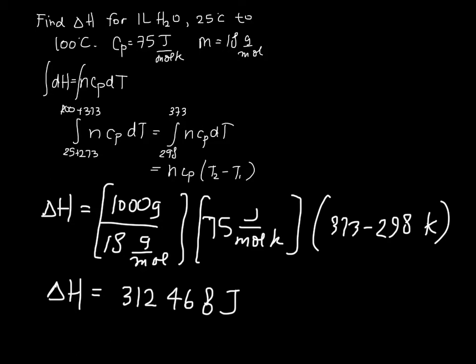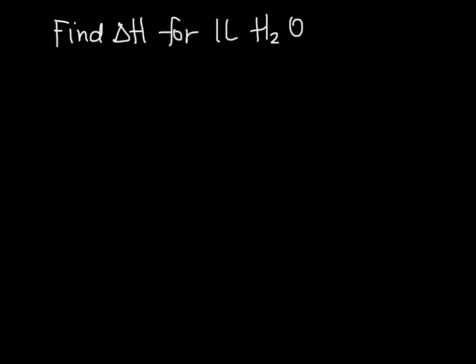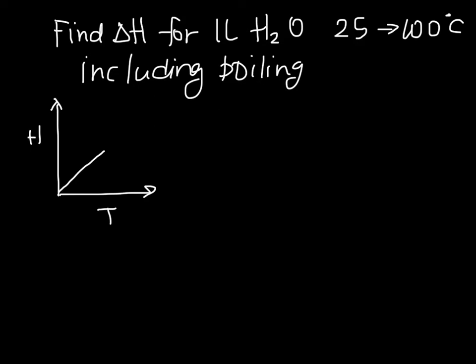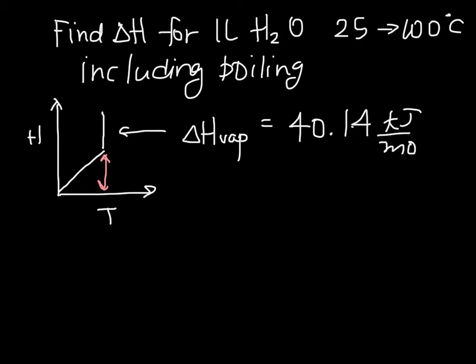Now, if we want to include the phase transformation, we can do that. We want to find delta H for one liter of water from 25°C to 100°C including boiling. We already calculated the heating contribution; when it boils, there is an additional enthalpy change that must be looked up. For water, the delta H of vaporization is 40.14 kJ/mol.